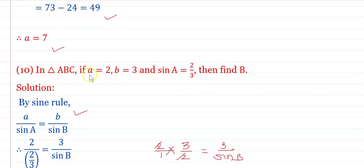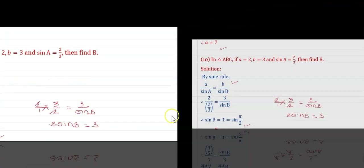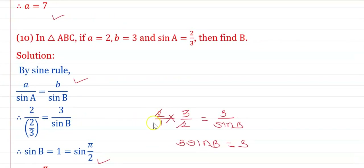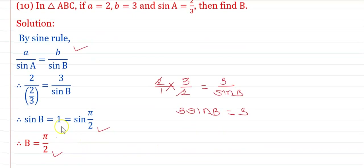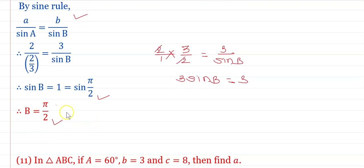In triangle ABC, if a = 2, b = 3 and sin A = 2/3, find angle B. By the sine rule: a/sin A = b/sin B. Substituting: 2/(2/3) = 3/sin B, which gives 3/2 = 3/sin B. Simplifying: 3·sin B = 3, so sin B = 1 = sin(π/2). Hence angle B = π/2.